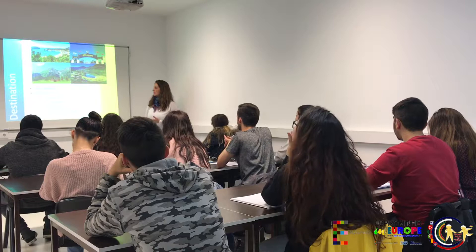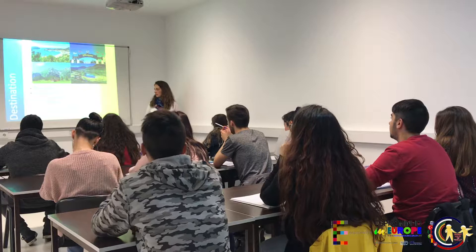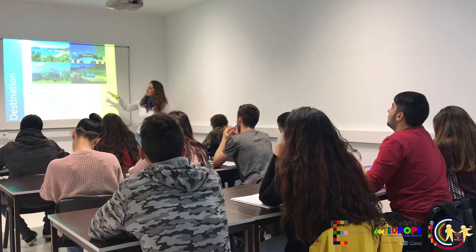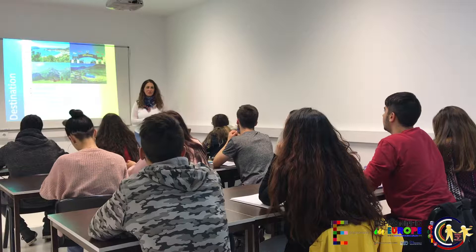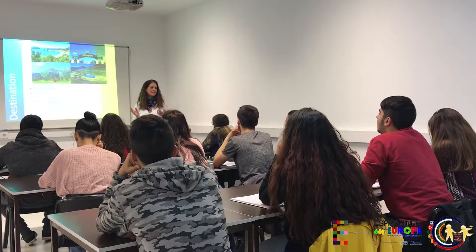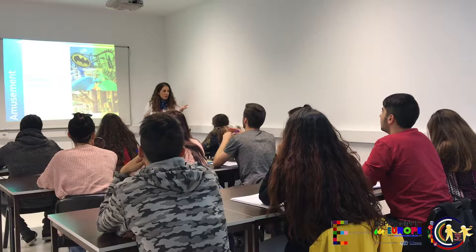We could divide the destinations into three types: amusement, sports, and resorts. In the amusement theme, what type of attractions will we find? A planetarium, an aquarium, a zoo, water parks, and theme parks. You can find theme parks, water parks, zoos, aquariums, and all those ideas.